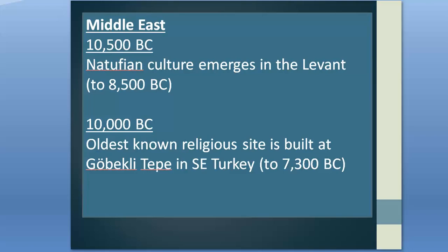The Kebaran culture was an upper Paleolithic culture that emerged in the eastern Mediterranean around 18,000 BC, named after its type site of Kebara Cave south of Haifa in Israel. A correction is needed: the Natufian culture did not emerge in 12,500 BC as previously stated. The Natufian culture, an Epipaleolithic group, actually emerged in the Levant from 10,500 BC. They were hunter-gatherers who foraged for wild cereals, legumes, almonds, and pistachios, and hunted gazelle, deer, wild boar, and aurochs.